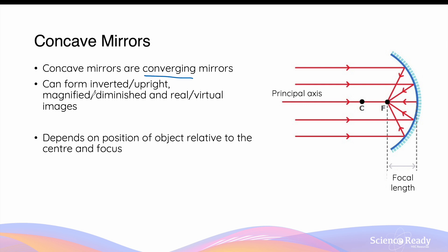Concave mirrors are a bit tricky, because they can form a variety of different images. It can be inverted, so upside down, or upright. It can be magnified or diminished, so therefore it can change in size. And it can also be real or virtual, which we'll discuss what this means in a moment. The exact type of image that can be formed in a concave mirror depends on the position of the object relative to the center and focus of the concave mirror.